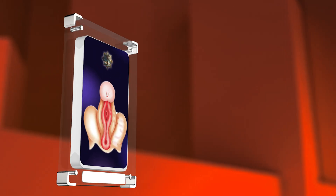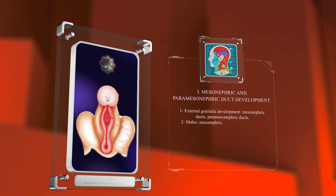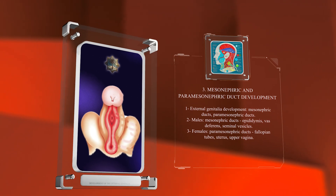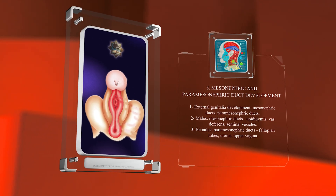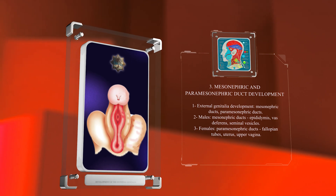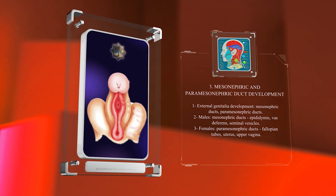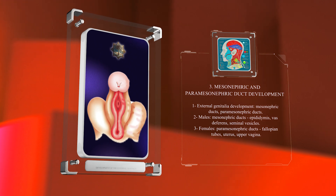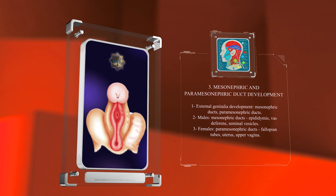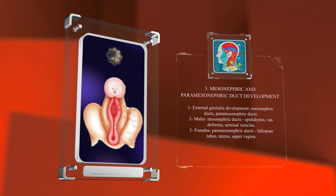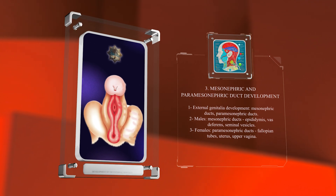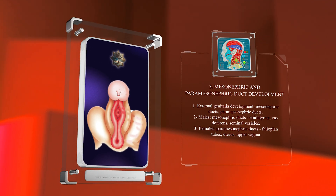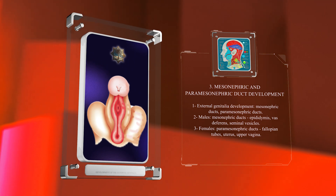The development of the external genitalia is closely associated with the differentiation and regression of two sets of ducts: the mesonephric ducts and the paramesonephric ducts. In males, the mesonephric ducts give rise to the epididymis, vas deferens, and seminal vesicles, while the paramesonephric ducts regress. In females, the opposite occurs, with the paramesonephric ducts developing into the fallopian tubes, uterus, and upper vagina, while the mesonephric ducts regress.